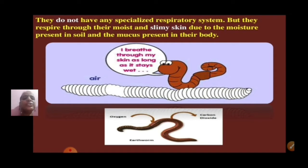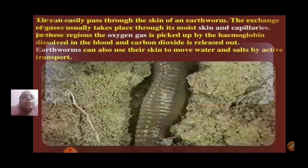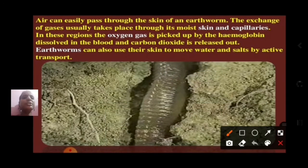Their skin is very thin and supplied with a rich network of blood vessels, and oxygen and carbon dioxide diffuse through them only. Air can easily pass through the skin of an earthworm. The exchange of gases usually takes place through its moist skin and capillaries.